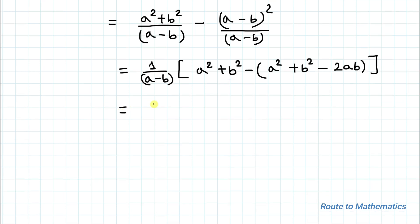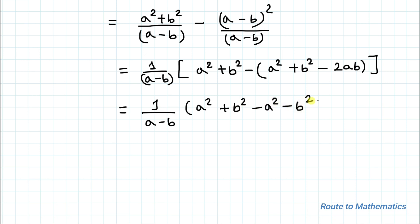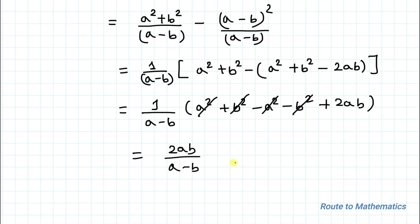This equals 1 divided by (a minus b), multiplied by a squared plus b squared minus a squared minus b squared plus 2ab. The a squared terms cancel out and the b squared terms cancel out, leaving us with 2ab divided by (a minus b).